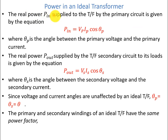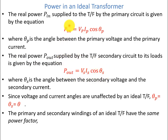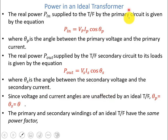The real power P_in supplied by the primary circuit is given by P_in = VP · IP · cos(θP), where θP is the angle between the primary voltage and primary current. The real power P_out supplied by the secondary circuit to its loads uses the same power triangle formula with θS as the angle between secondary voltage and secondary current. Since voltage and current angles are unaffected by an ideal transformer, θP equals θS equals θ.